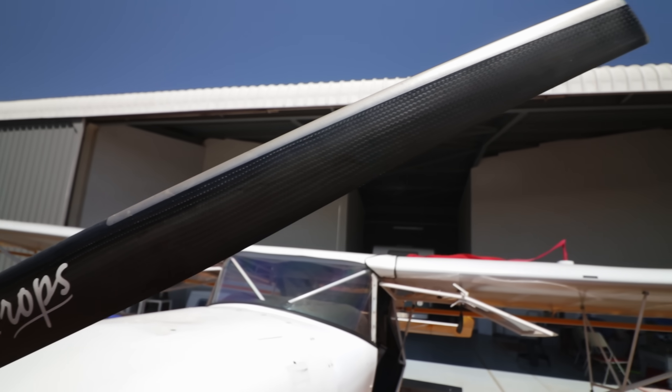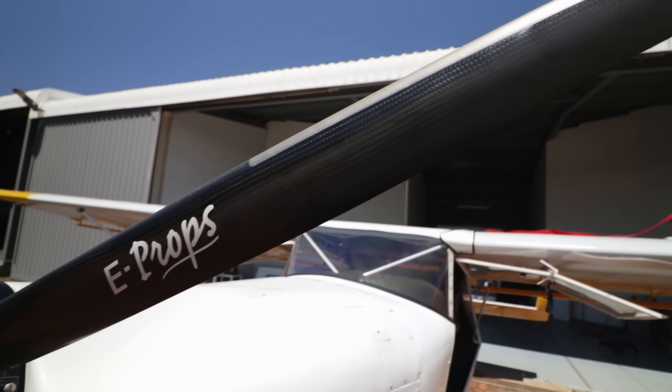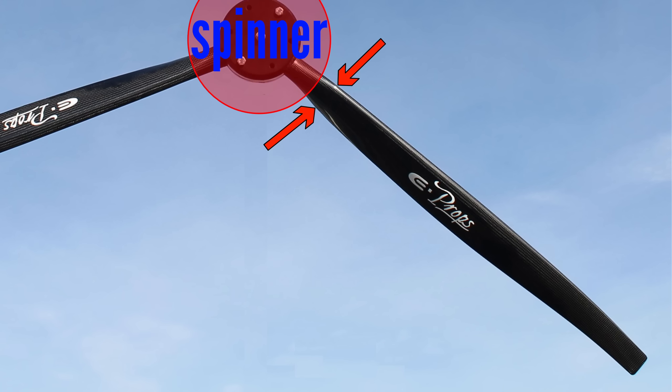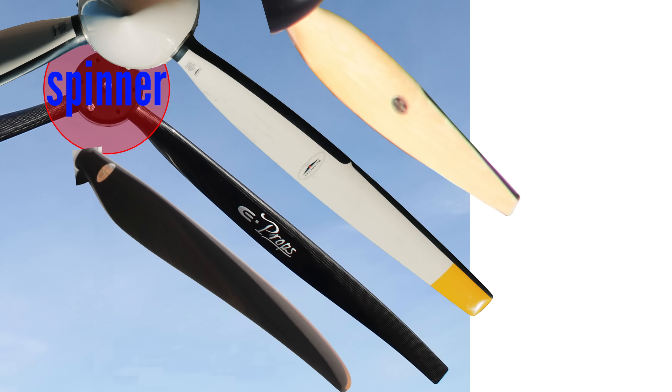In contrast, E-PROPS blades are relatively thin chorded, but the chord at the root is wider relative to the rest of the blade, compared to a typical propeller. The chord then does not widen significantly toward the middle and only tapers slightly toward the tip. This gives the blade a different aerodynamic profile compared to a typical propeller.